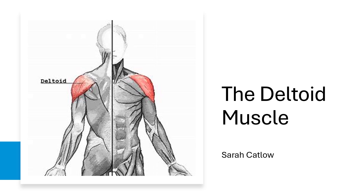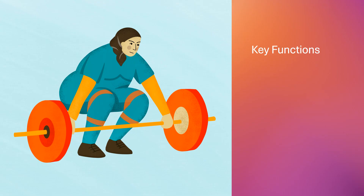The deltoid is responsible for giving your shoulders its rounded appearance and it plays a really important role in moving your arm. So let's look at the key functions of the deltoid muscle.